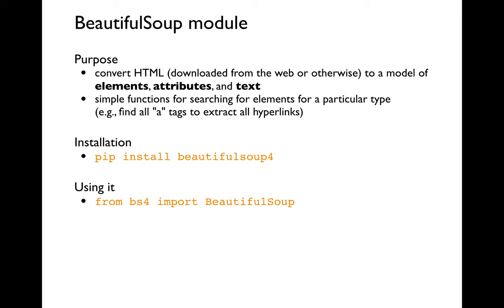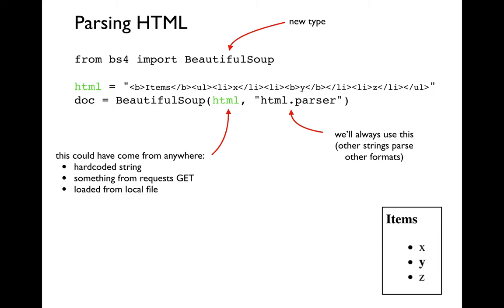You should install Beautiful Soup with `pip install beautifulsoup4`, abbreviated bs4. What you usually do is `from bs4 import BeautifulSoup`. Notice that when installing it's all lowercase, but when importing, the B and S in BeautifulSoup are both capitalized. BeautifulSoup is a new type in Python, and objects of that type each represent a model of a webpage.